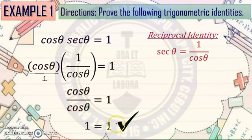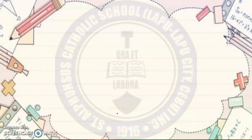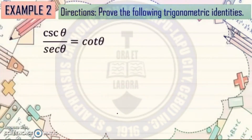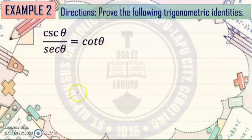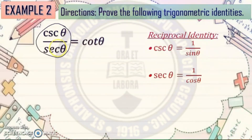Let's proceed to number 2. Cosecant theta times secant theta, all over secant theta, is equal to cotangent theta. The first thing you're going to do, class, is decide which side of the equation you're going to work on first. I suggest that you work on the more complicated side, which is the left side. We're going to find the trigonometric identities that would fit in this given. We'll use the reciprocal identities: cosecant theta equals 1 over sine theta, and secant theta equals 1 over cosine theta.